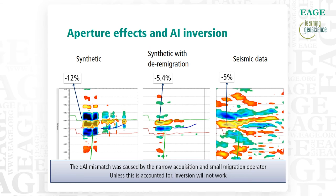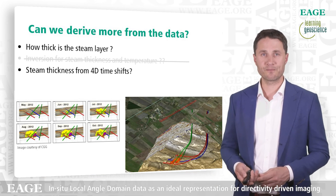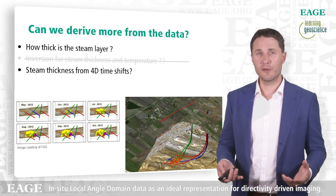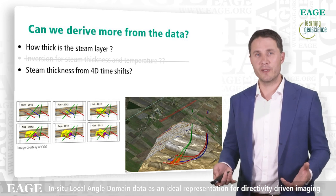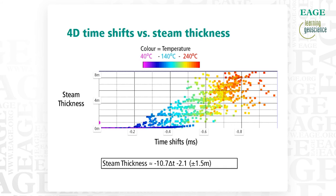So inversion is out of the window — that didn't work. So what can we do? We go back to the 4D timeshifts. Although we thought we couldn't unravel all these effects, let's see what we can get out of it. Can we get steam thickness out of it? We think we can.